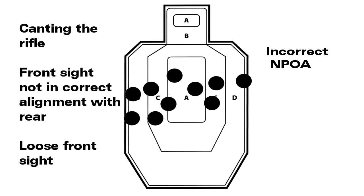Solution: keep sights and rifle vertical for each shot. Always check and align sights correctly. Check and tighten front sight. Check natural point of aim.